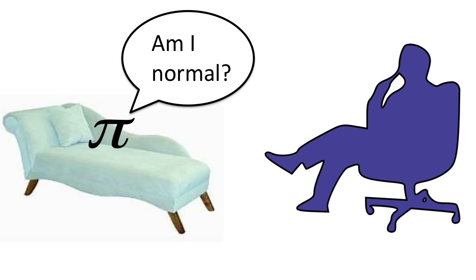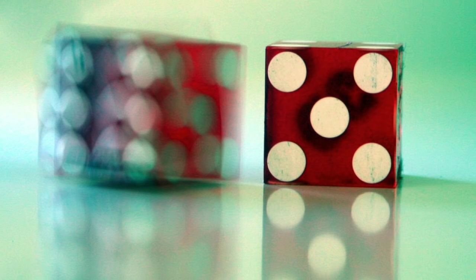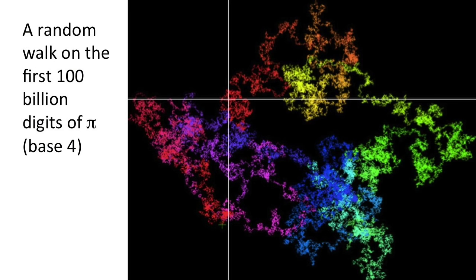Why is the normality of numbers important? Normal numbers could be used to simulate random number generators. This image shows a random walk generated by the digits of pi in base four. Starting at the origin, the walk moves a step in one of four possible directions determined by the next digit.